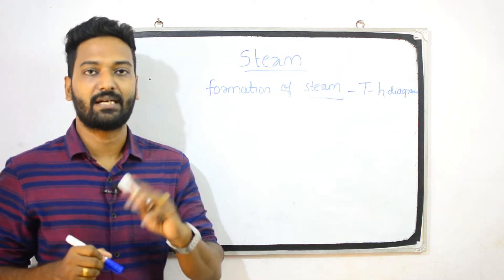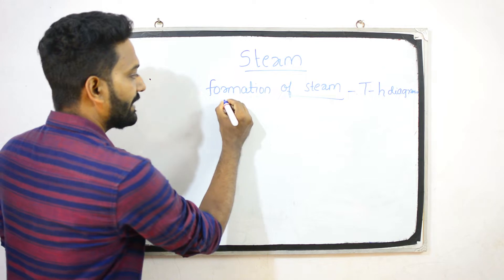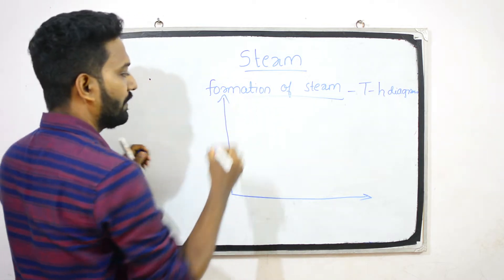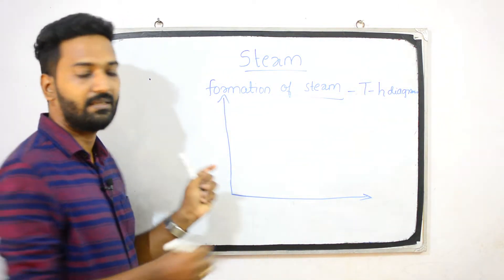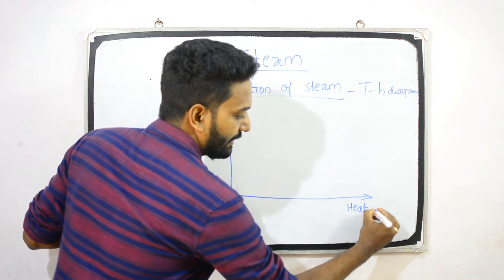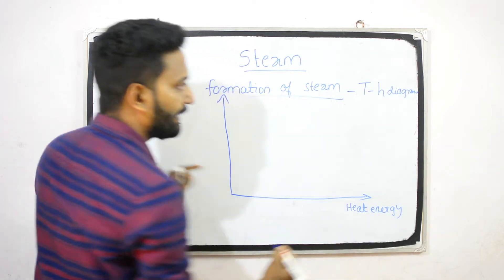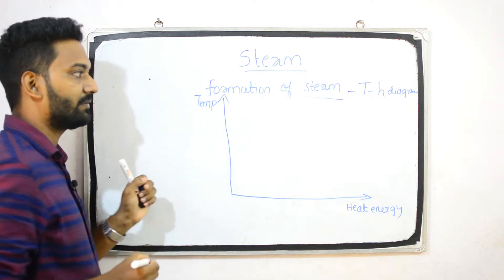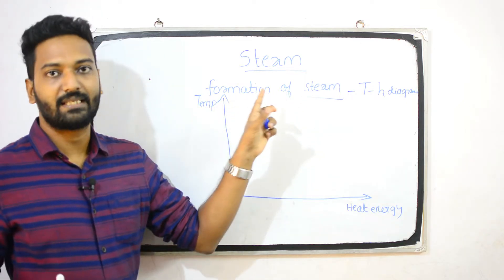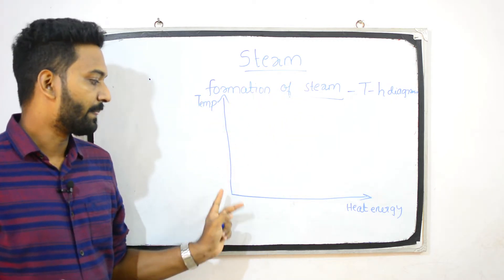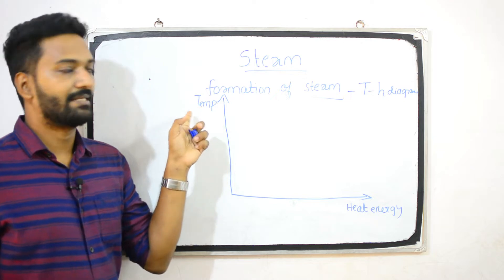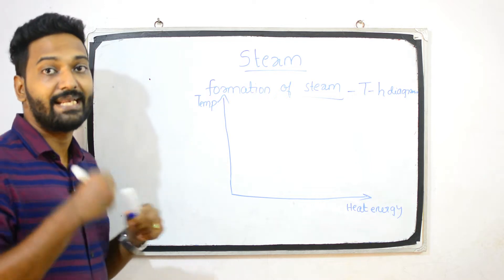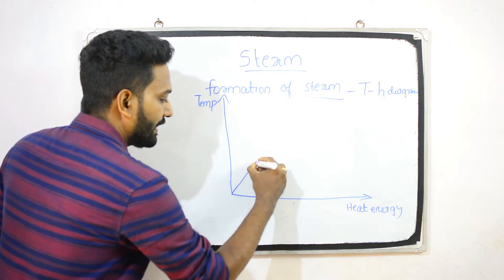Let's discuss this TH diagram. We call this the x-axis and y-axis. The x-axis is the heat energy and the y-axis is the temperature. This graph starts at 4 degrees Celsius.